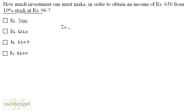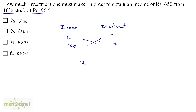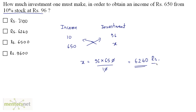The income is Rs. 10 when the investment — that is the market value of one share — is Rs. 96. We need the investment to obtain an income of Rs. 650. Cross multiplying: x = 96 × 650 / 10. The zeros cancel, giving 96 × 65 = Rs. 6,240. Option B is the correct answer.